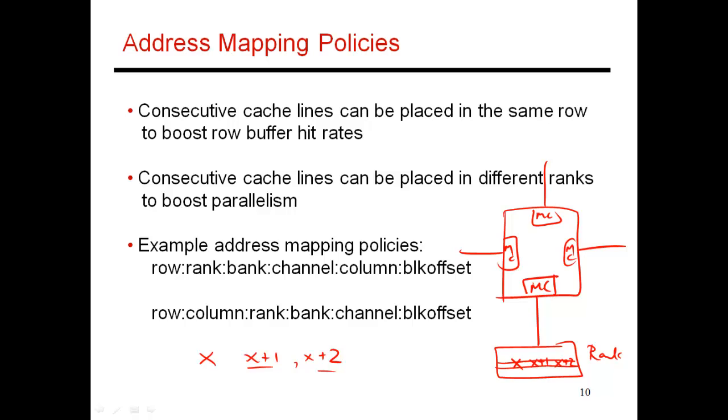This is called an address mapping policy where consecutive cache lines are placed in the same row, allowing you to have high row buffer hit rates for applications with locality. Consecutive cache lines have different column bits but share the same channel, bank, and rank bits.